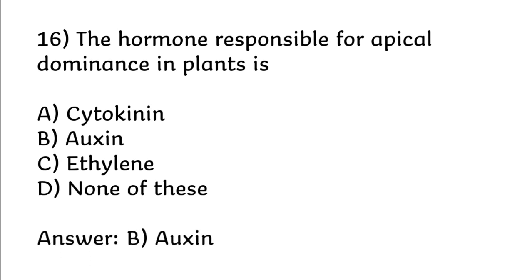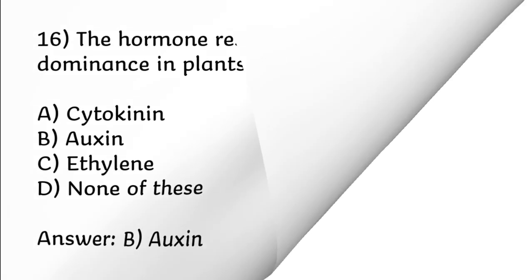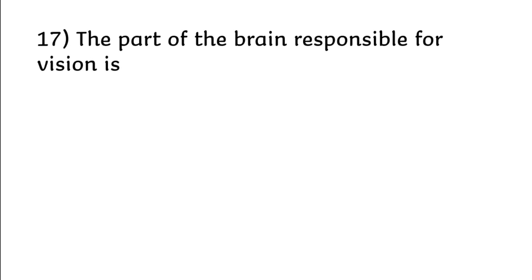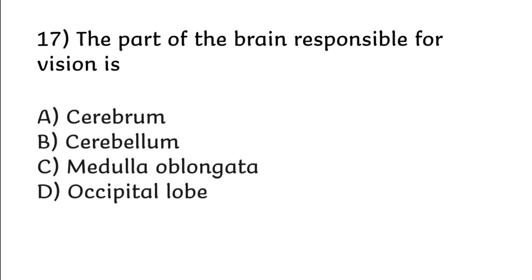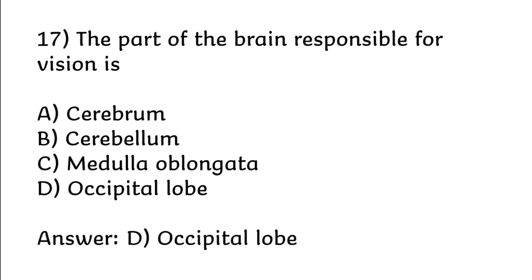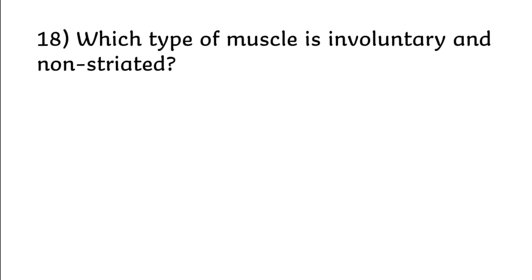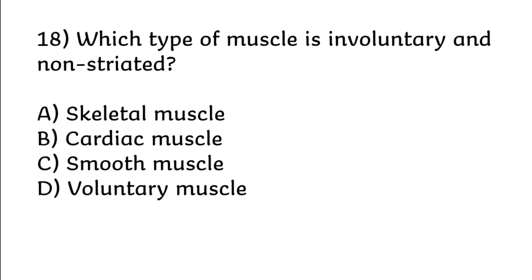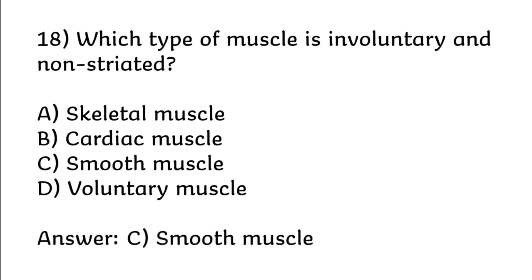Correct answer is option B: auxin. The part of the brain responsible for vision is: cerebrum, cerebellum, medulla oblongata, occipital lobe. Correct answer is option D: occipital lobe. Which type of muscle is involuntary and non-striated? Options: skeletal muscle, cardiac muscle, smooth muscle, voluntary muscle. Correct answer is option C: smooth muscle.